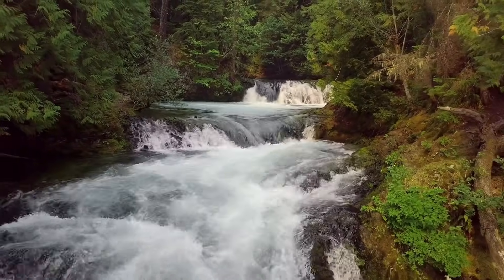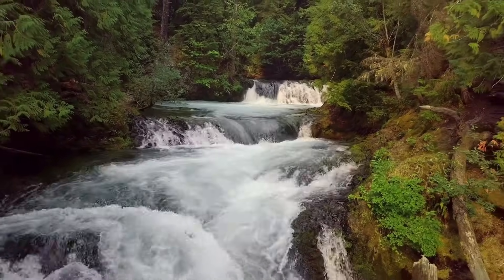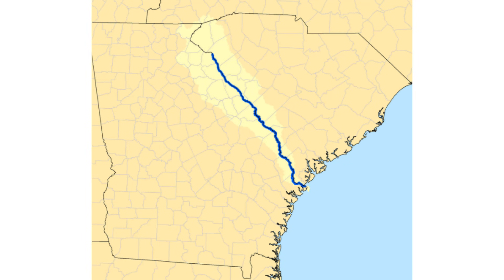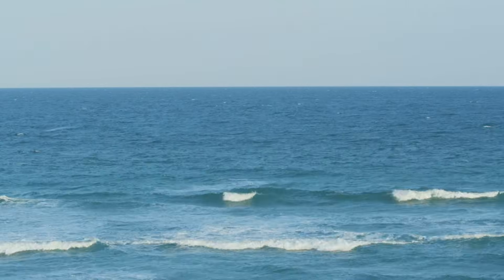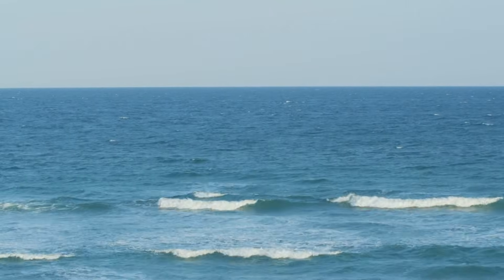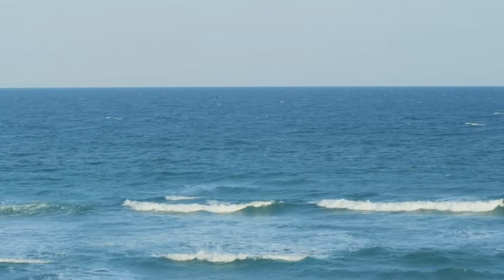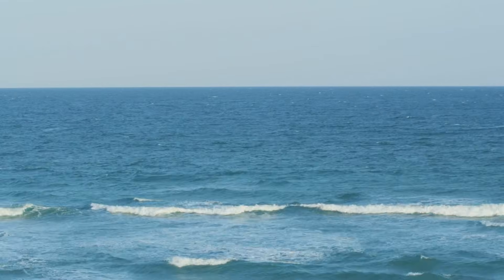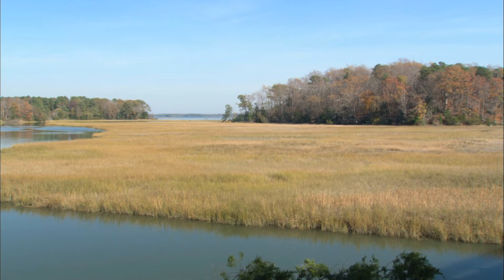If you look at the state of Georgia, you can see the Savannah River runs through it. The Savannah River dumps into the Atlantic Ocean and creates an estuary. Here is what a small portion of this estuary looks like.